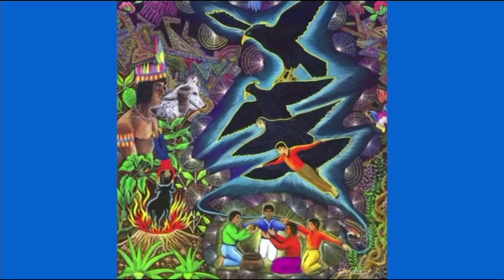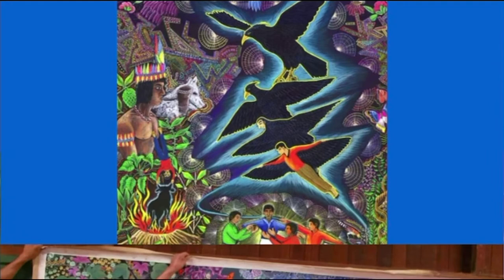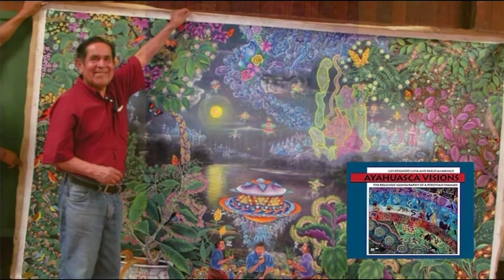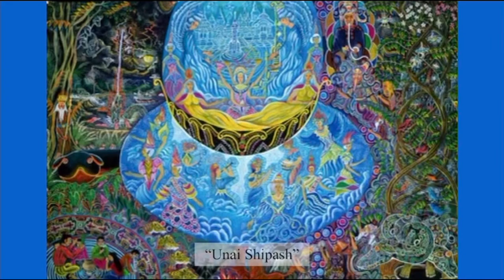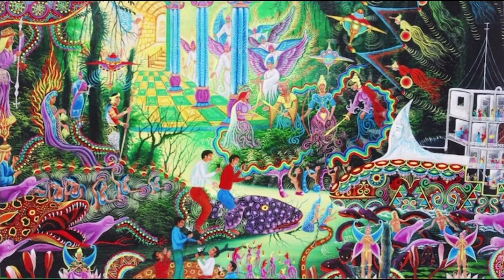Pablo Amaringo was a Peruvian artist known for his colorful depictions of his visions from drinking ayahuasca, an entheogenic brew. The outside world was introduced to his work with the book Ayahuasca Visions: The Religious Iconography of a Peruvian Shaman. Since then, he has been recognized as one of the world's great visionary artists. His paintings capture the spirits, sub-aquatic cities, celestial realms, and extraterrestrial beings of great wisdom. Pablo founded the Uzco Ayad Amazonian School of Art and was dedicated to preserving the ways of life and indigenous knowledge of the Amazon.